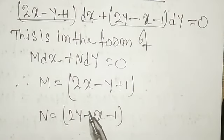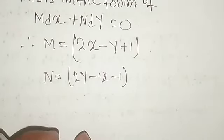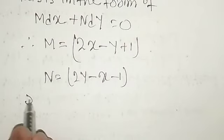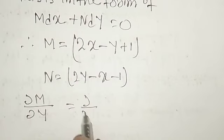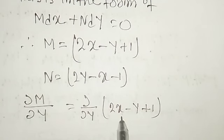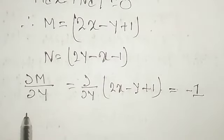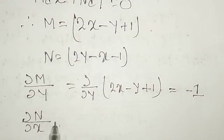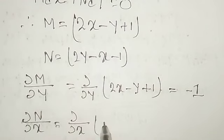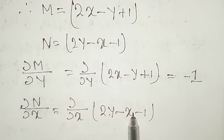Now we check whether this differential equation is exact by finding ∂M/∂y and ∂N/∂x. For ∂M/∂y: M = 2x − y + 1, differentiating with respect to y gives 0 − 1 + 0 = −1. For ∂N/∂x: N = 2y − x − 1, differentiating with respect to x gives 0 − 1 − 0 = −1.